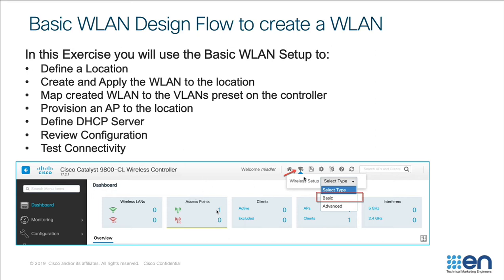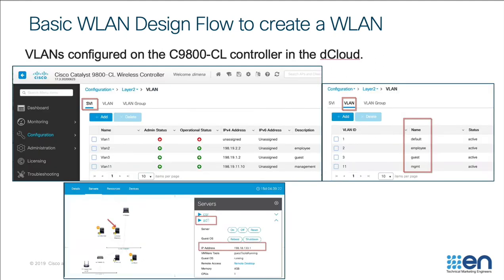We're going to start this basic configuration by clicking on the icon and choosing the basic option. Before we go into the actual demonstration — configuring it live on a controller in the cloud — a couple of additional housekeeping details. First of all, the VLANs are already pre-configured on the controller in the cloud. There are SVIs — switch virtual interfaces — and as you can see, there are three VLANs defined, each given a name: employee, guest, and management.